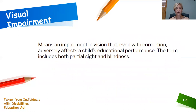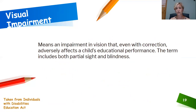Visual impairment is our last category. It is an impairment in vision that, even with correction, adversely affects the child's educational performance at school. The term includes both partial sight and blindness.